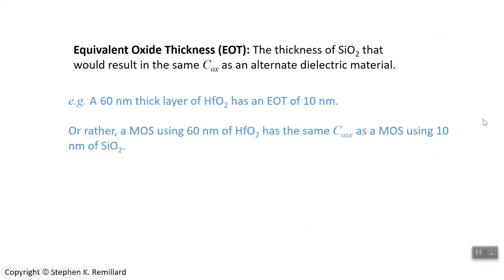If you had a silicon dioxide layer with a certain capacitance and you have another dielectric material layer that gives the same capacitance, the equivalent oxide thickness is a comparison of the two thicknesses that would give you the same capacitance.